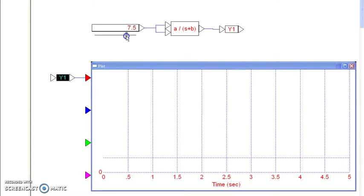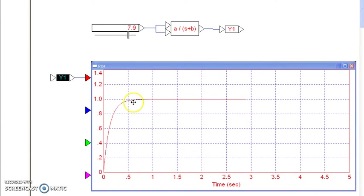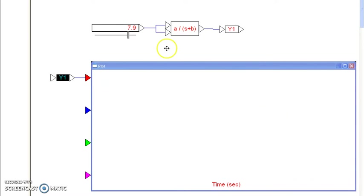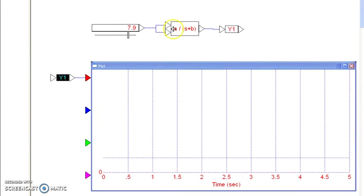Likewise, given the step response of a system, I can tell you what the transfer function is. From the settling time, I can tell you where the pole is. 4 over the settling time is your pole, the B. The DC gain tells you the ratio A over B.